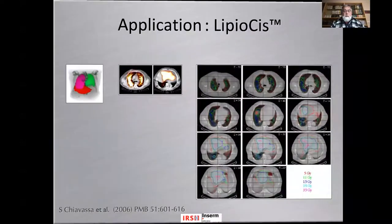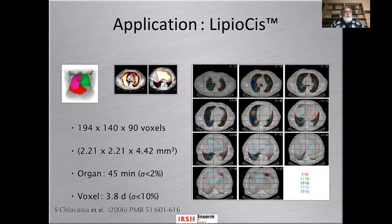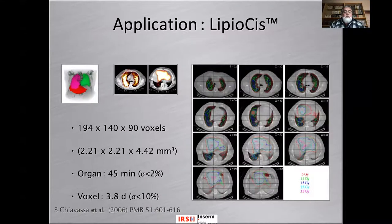That example used a code called ADIP, applied in lipiodol — a treatment of liver metastasis in hepatocarcinoma. In that 2006 example, for a volume of 194 × 140 × 90 voxels with 2 × 2 × 4 mm sides, the organ-level calculation with relative statistical fluctuation below 2% took 45 minutes. A voxel-based calculation with satisfactory statistics required four days. Even at the time, it was fairly accessible.